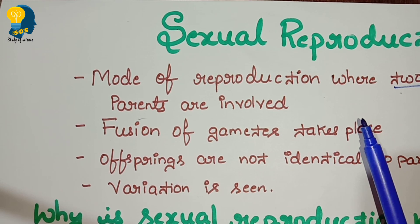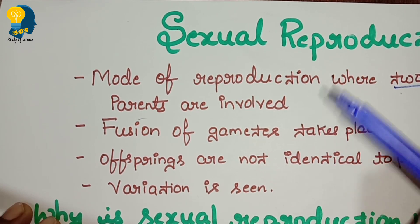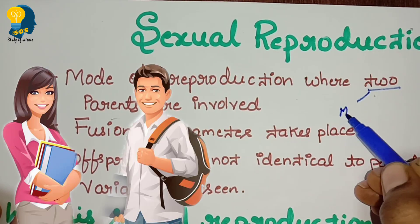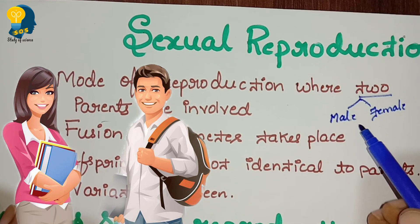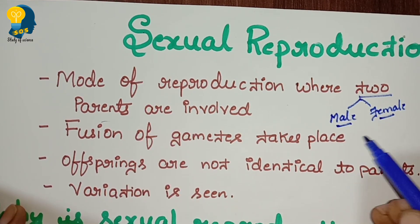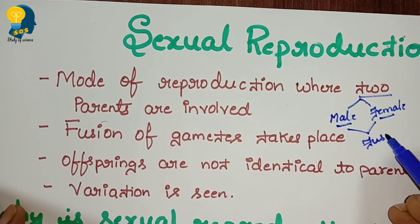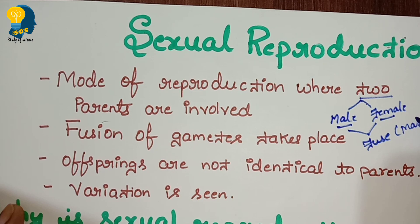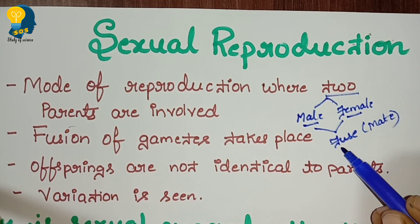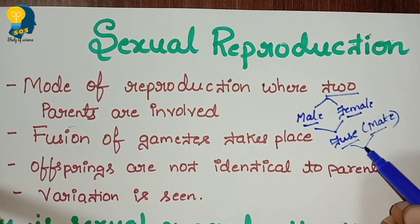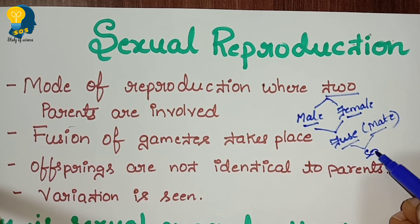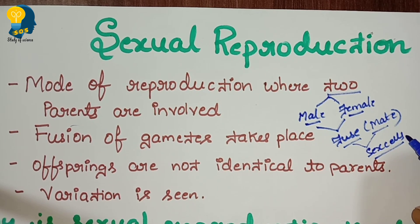So what happens between two parents? In two parents, one is the male and another one is the female. The male and female, they fuse. Another word for fuse, we call it as mate — they fuse or they mate. What exactly fuses? The sex cells will fuse under sexual reproduction.